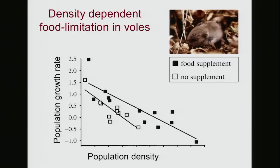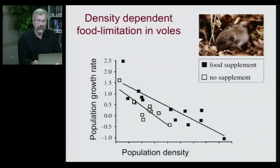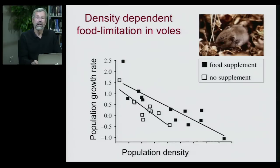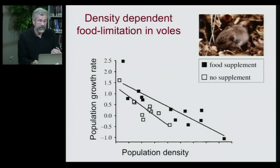We also know that density dependence is the result of certain particular ecological factors, like food limitation. Voles are a small rodent, very common in the northern part of the US and in Canada. These populations show density dependence — the population growth rate on the y-axis is low or even negative at high population densities. But if we supplement these voles with an artificial supply of food, for a given density they have a higher growth rate. This means they're being limited in some way by the amount of food, and if we give them more food, they're less limited.